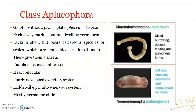The excretory system is poorly developed in Aplacophora and there are no nephridia. Instead, they have what is known as porocytes — poro meaning pore, cyte meaning cell. Porocytes are present in the pericardial wall and are believed to have excretory function. The nervous system is also primitive and ladder-like, with a pair of cerebral ganglia, two pairs of longitudinal nerve cords, and transverse commissures.